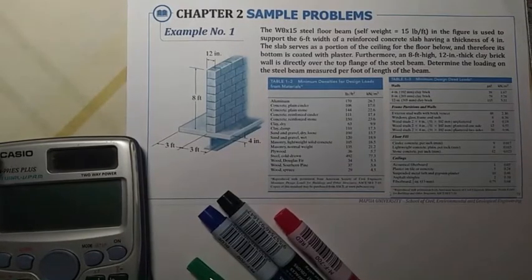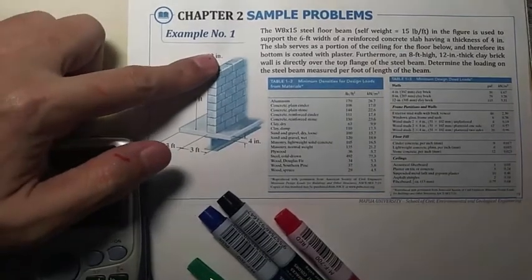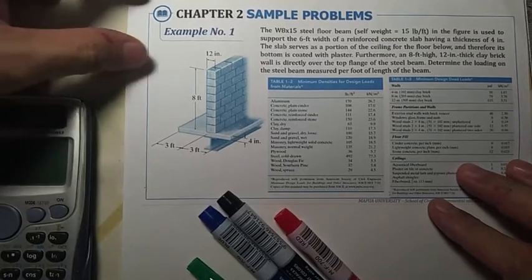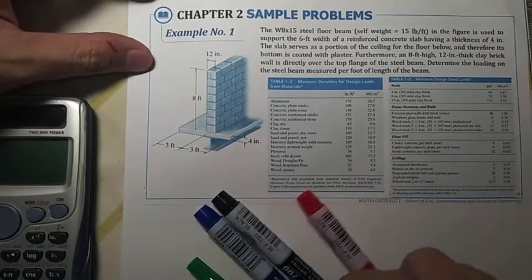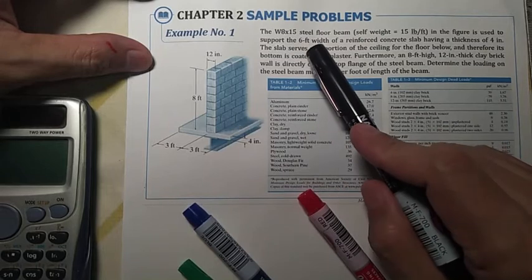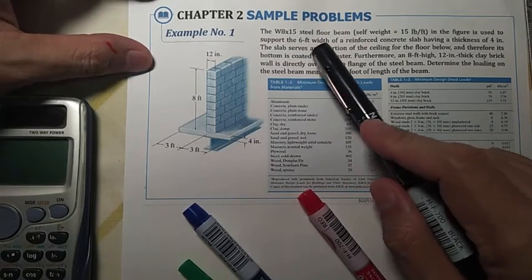Good day, so today we're going to solve sample problem number one on loads on structures. As given in this problem, we have a W8 by 15 steel floor beam, so that is a steel beam with a self-weight of 15 pounds per foot, actually a wide flange section.